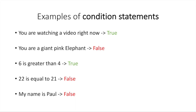This is a description of a particular state, whether something is or isn't. So if I was to say you're not watching a video right now, well, you would look at that and say, no, that's false. And so the computer does the same thing in code, usually dealing with things like numbers and things like that, not a statement like you are a giant pink elephant, which is false, but more a statement like 6 is greater than 4 or 22 is equal to 21, or my name is Paul — if the computer knew what my name was and it could compare it to Paul and say, no, those two names don't match. They're not exactly the same.